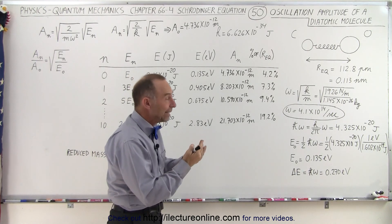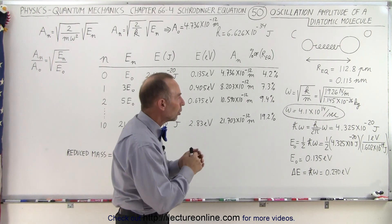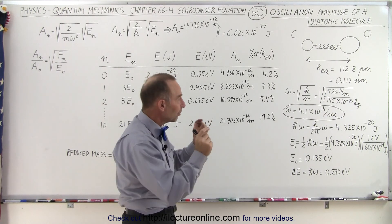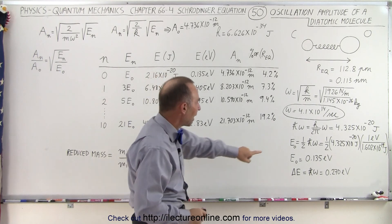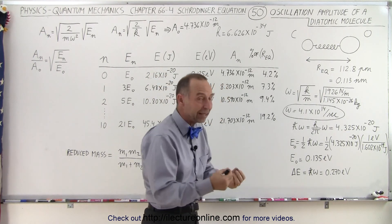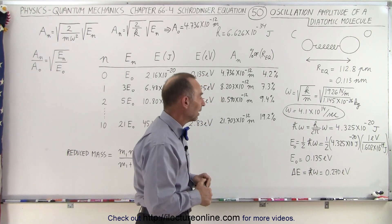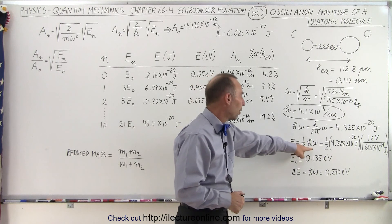Of course in the bottom state, the E sub naught state or the zero energy state as we call it, the molecule will still be vibrating because it will still have this amount of energy, the quantum mechanic energy that it has. Even at absolute zero Kelvin, the molecule would still be vibrating with that energy. It's one half h bar omega.